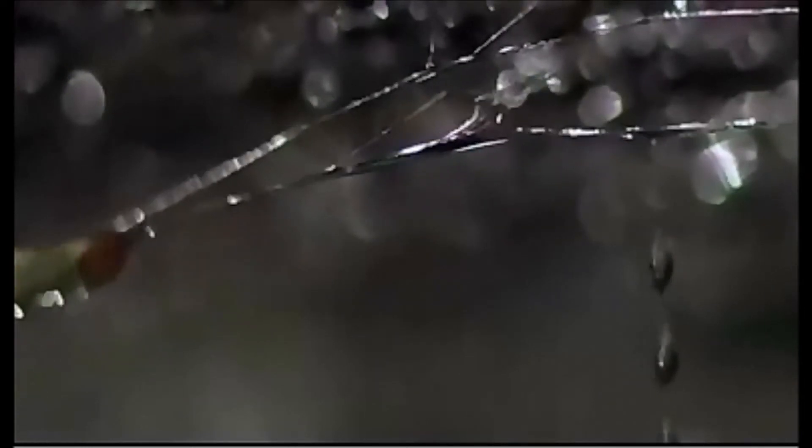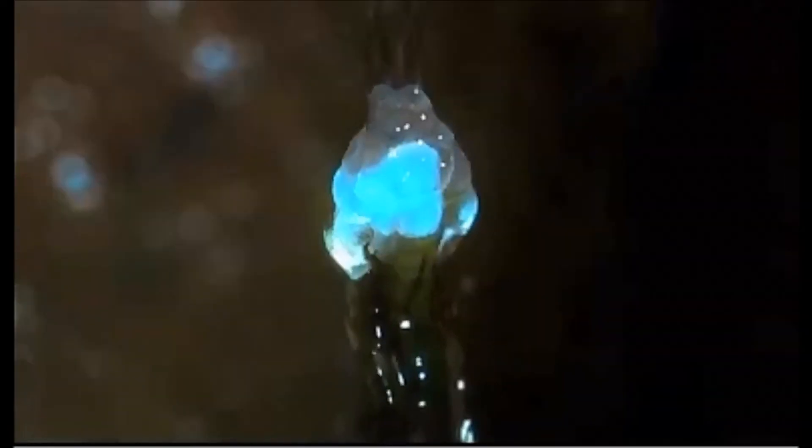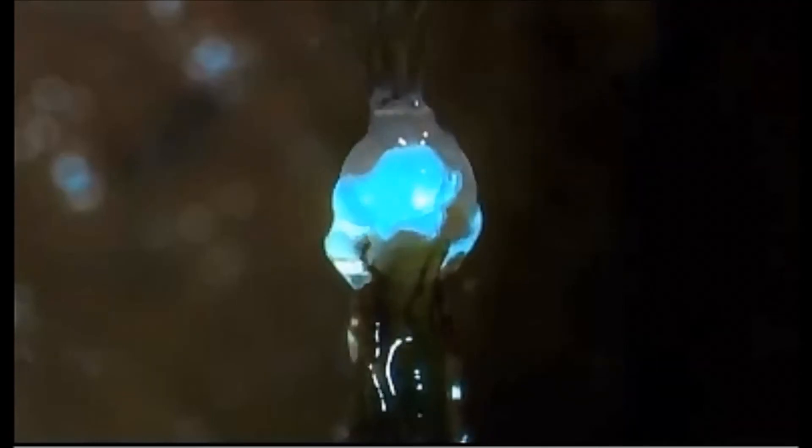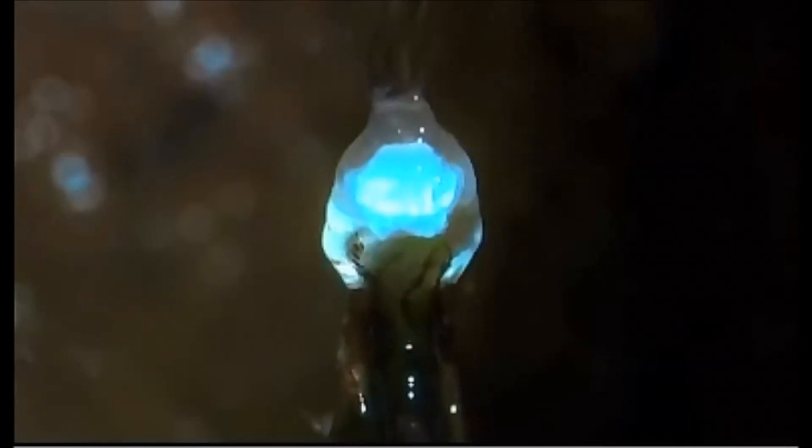Each glowworm produces dozens of these threads. Once its lines are set, the glowworm hangs from a mucus hammock and waits like a patient angler. But the glowworm doesn't leave everything to chance. That ghostly blue light is the result of a chemical reaction taking place inside a special capsule in its tail. The light literally shines out of its backside, its allure for attracting prey.